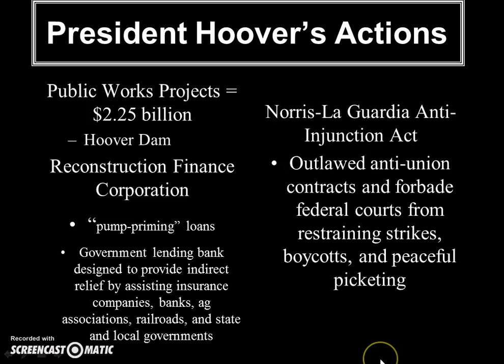So what did Hoover do during the Great Depression? He didn't last very long — he was voted out of office by people seeking significant change. Initially he ignored it; he was a Republican, laissez-faire type of president. Late in the Depression he did start some public works projects and initiated the Hoover Dam project. He also created the Reconstruction Finance Corporation, which would create pump-priming loans — loaning money to banks to boost their economies and trickle down to local governments, associations, railroads, and other banks. He also worked on getting the Norris-LaGuardia Anti-Injunction Act, which outlawed anti-union contracts and forbade federal courts from restraining strikes and picketing.